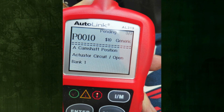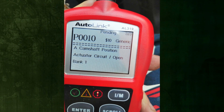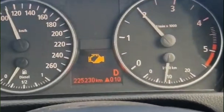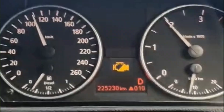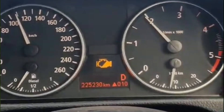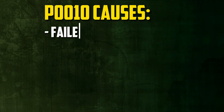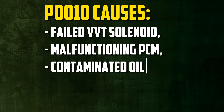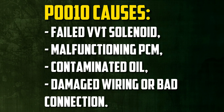The P0010 error code's root cause is not known with certainty — it could be any number of issues, which is why a diagnosis is required. These are a few of the more typical causes: failed VVT solenoid, malfunctioning PCM, contaminated oil, and damaged wiring or bad connection.